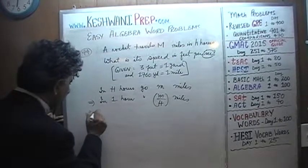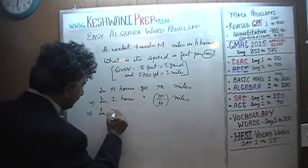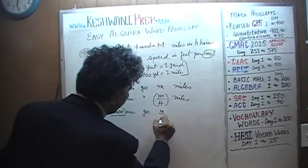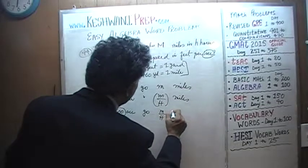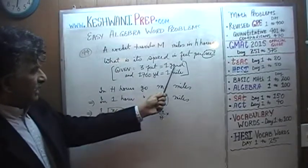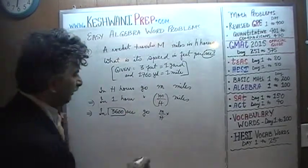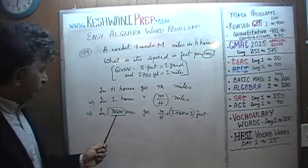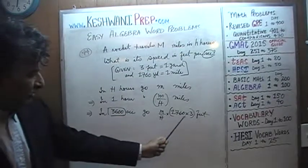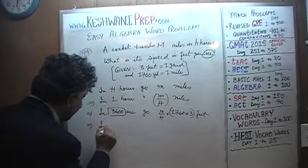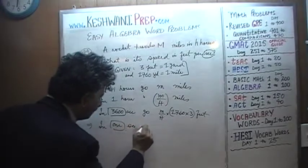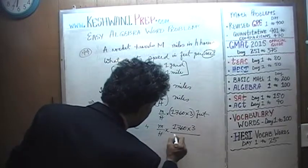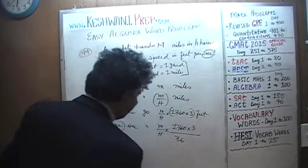So let's do that. One hour is the same as 3600 seconds. To go m over h miles — that's the same as 1760 yards per mile times three feet per yard. So in one second, we can go m over h times 1760 times 3 over 3600 feet. I'm going to write 3600 as 36 times 100.